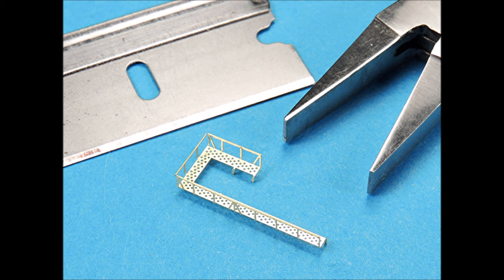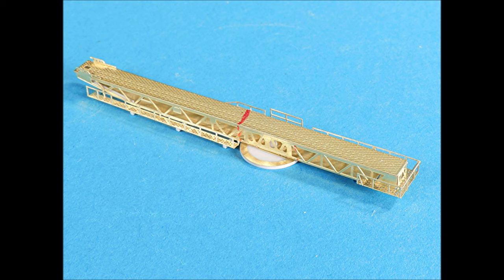The aft catwalks for the catapults were then shaped. The railings were bent up just as in the forward parts, then the positioning tabs were bent. However, I had to cut the positioning tabs off because they interfered with its placement. The aft catapult catwalk has been glued into place.